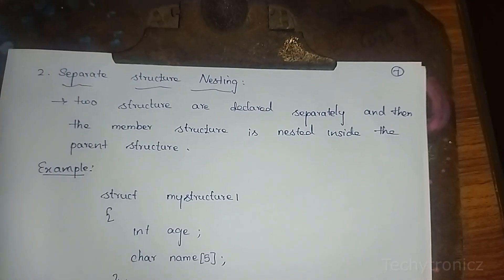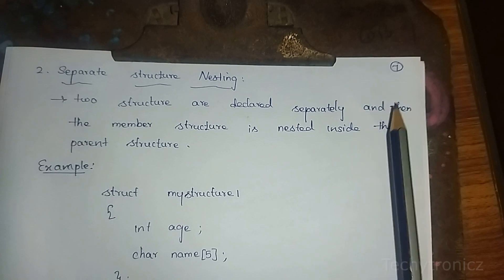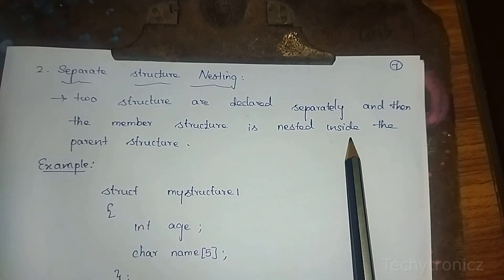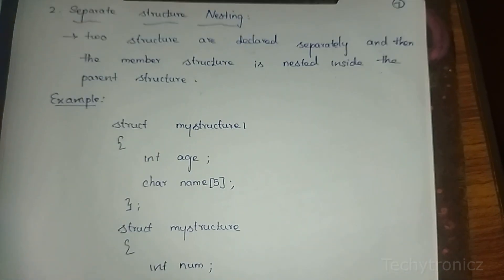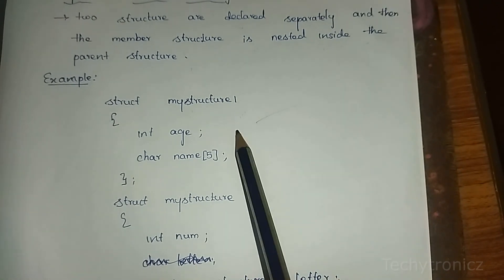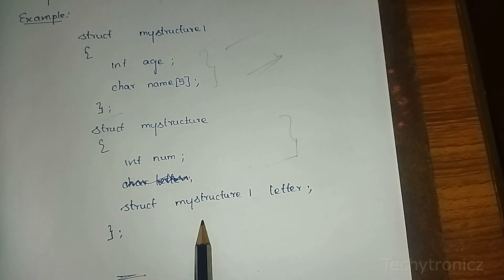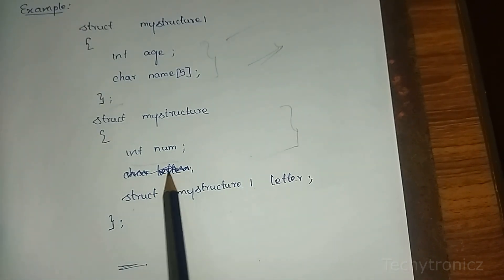The second type is separate structure nesting. Two structures are declared separately, and then the member structure is nested inside the parent structure. The member structure is included as a member variable inside the parent structure — this is separate structure nesting.